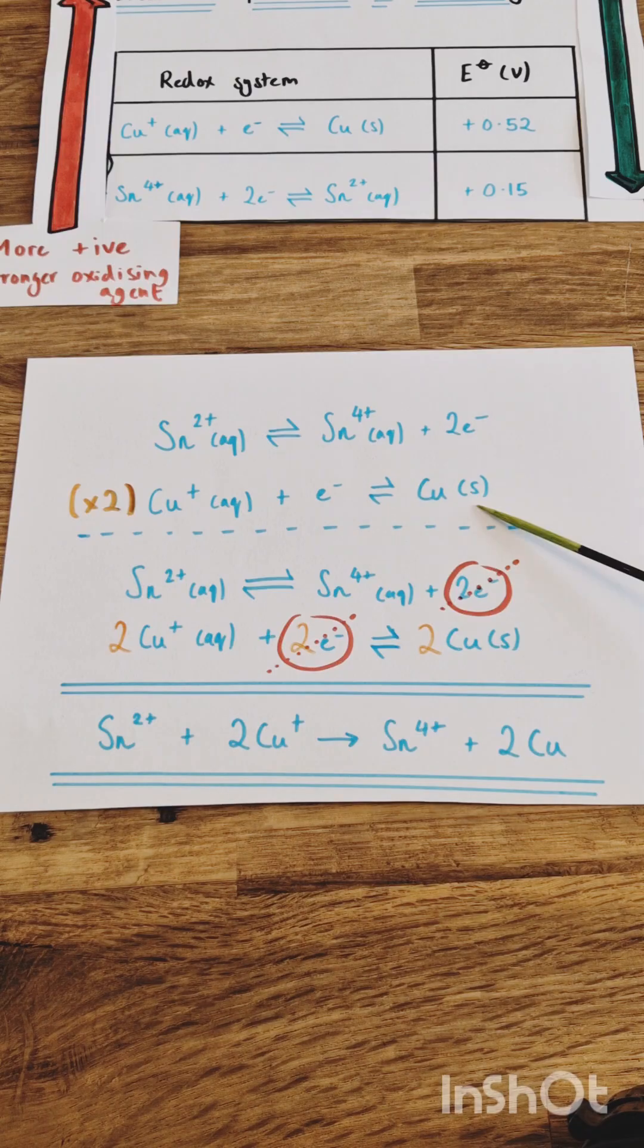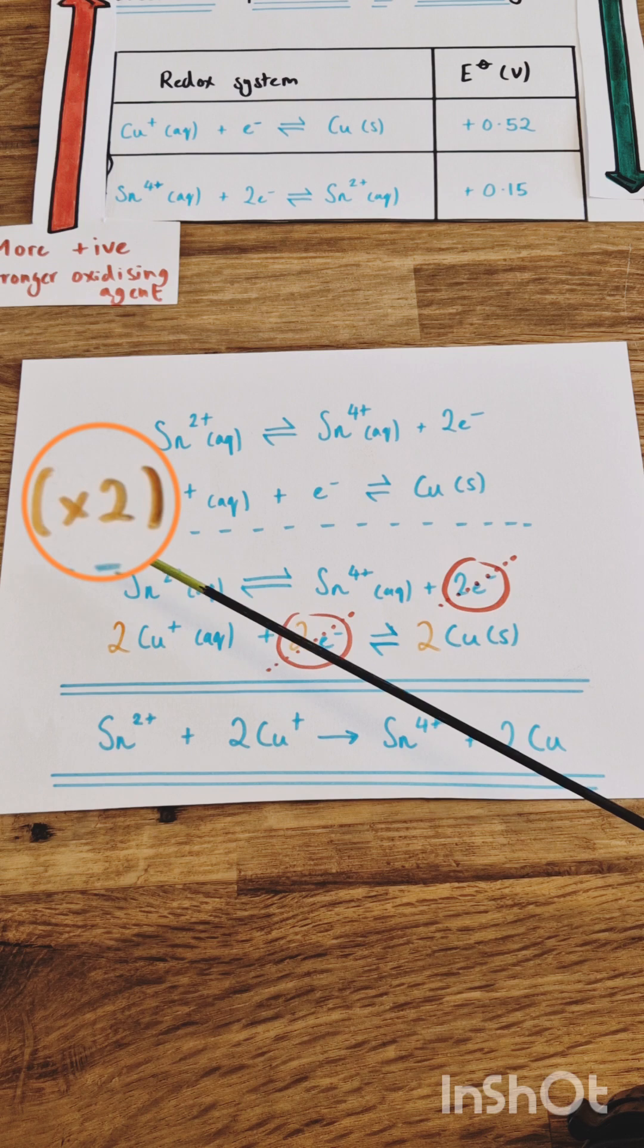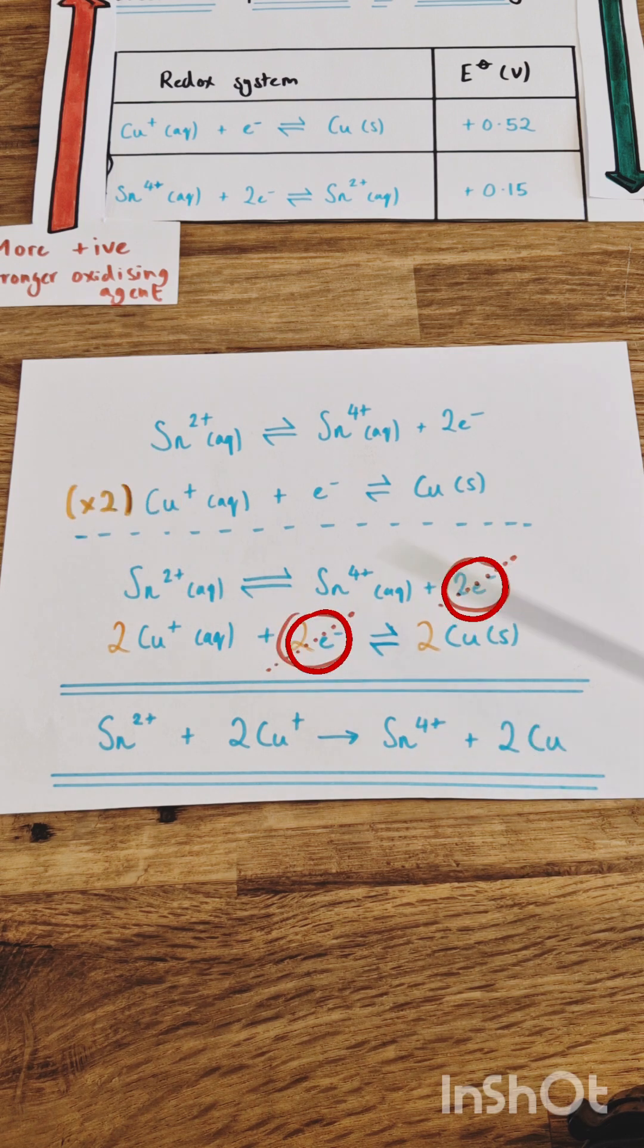Finally, we combine the two half equations, having to multiply the copper one by two to balance out the number of electrons, canceling them down, which leaves us with the overall feasible redox reaction.